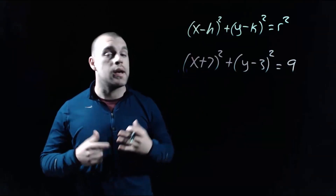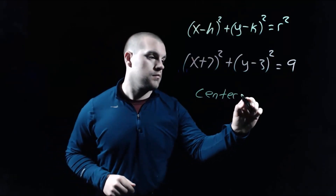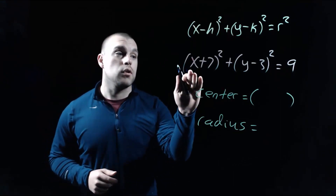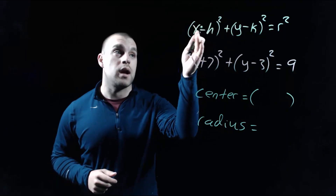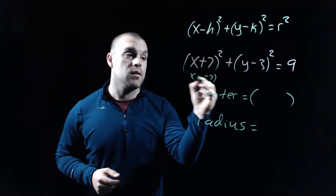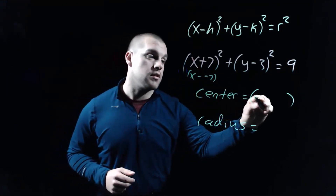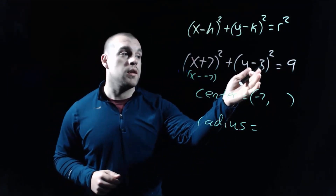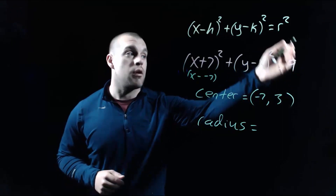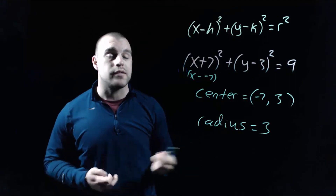In this example we're again given an equation and want to find the center point and radius. For x plus 7, we rewrite it as x minus negative 7 because a double negative turns into a positive, so our h value is negative 7. Looking at the k value, the number being subtracted from y is 3. On the right-hand side we have equals 9, which is our r squared value, so the radius is 3. That's going to be it for this video. Thanks for watching.